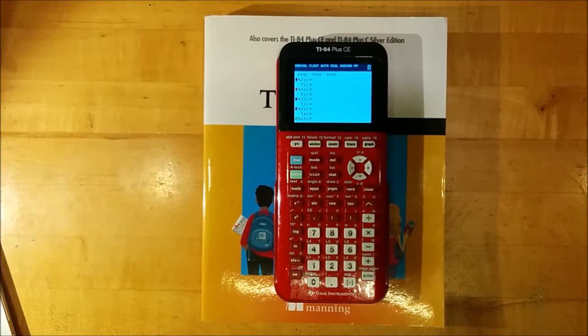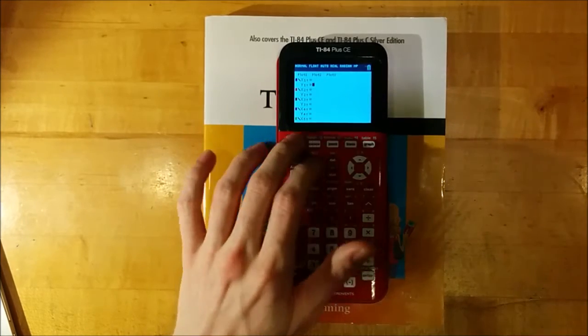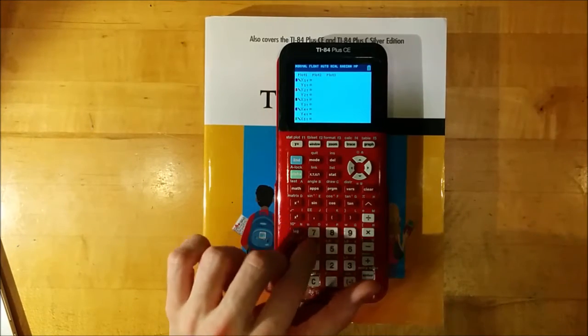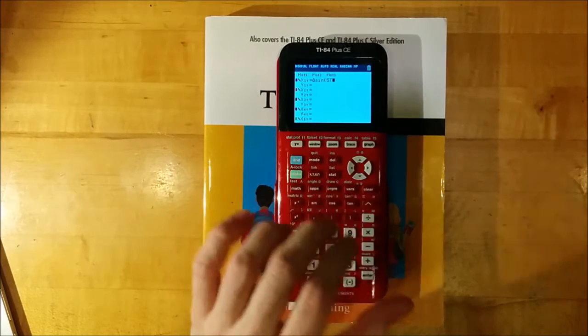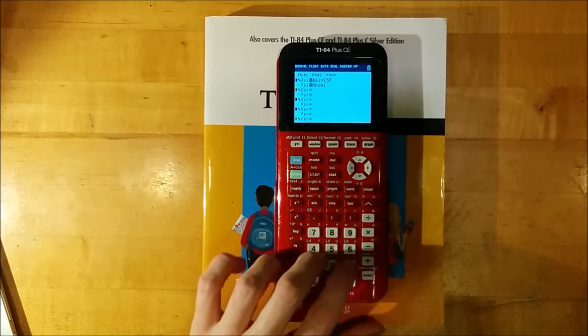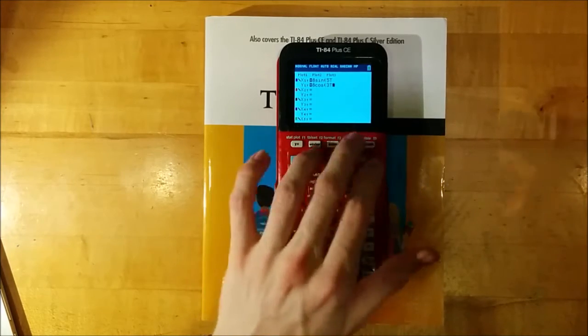A more complicated example would be something called a Leases U Curve. In order to graph this, we will go to Y equals once more, clear out any equations that you have in X1t and Y1t, and then type 8 sine of 5t for X1t, and 8 cosine of 3t for Y1t.